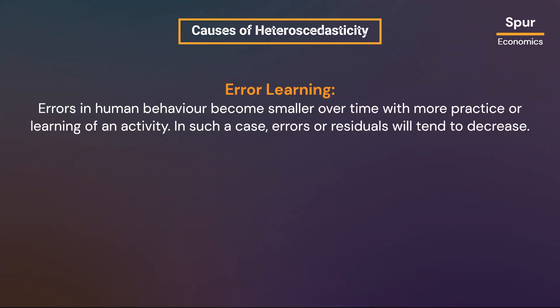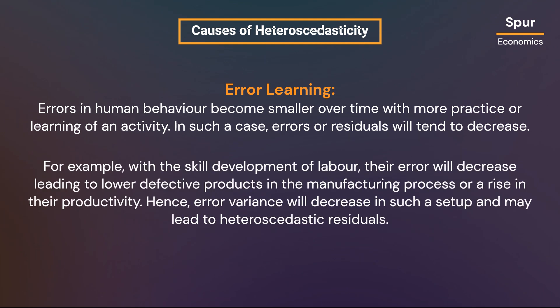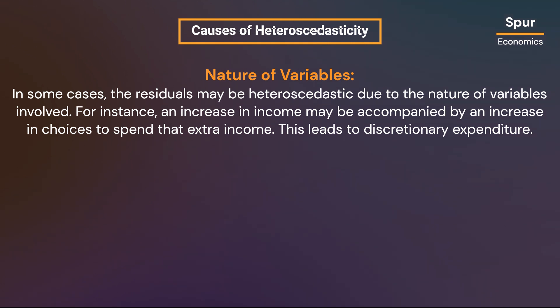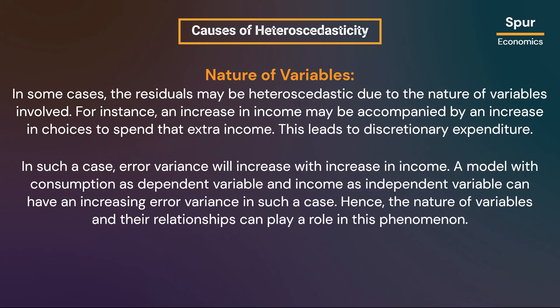Errors in human behavior become smaller over time with more practice or learning. In such cases, residuals tend to decrease — for example, with skill development of labor, errors decrease, leading to fewer defective products or higher productivity, so error variance decreases. In other cases, residuals may be heteroscedastic due to the nature of the variables involved. For instance, an increase in income may be accompanied by an increase in discretionary expenditure choices, causing error variance to increase with income in a model with consumption as dependent variable and income as independent variable.